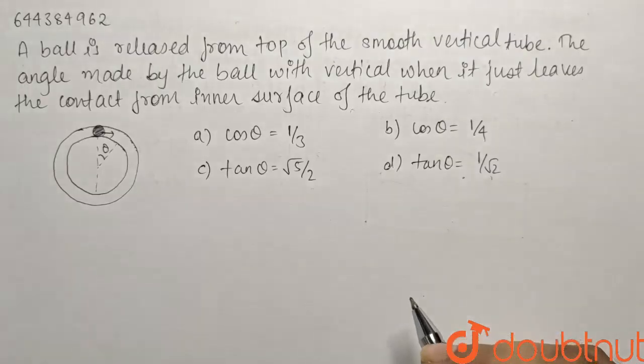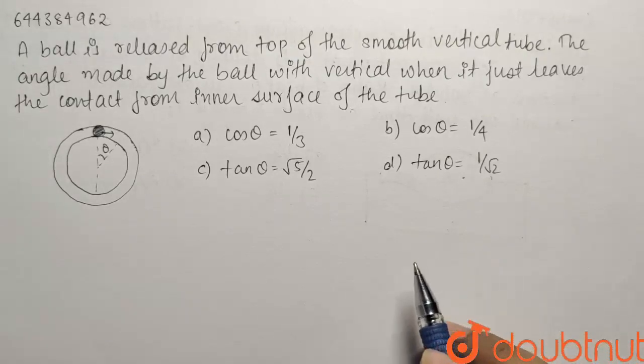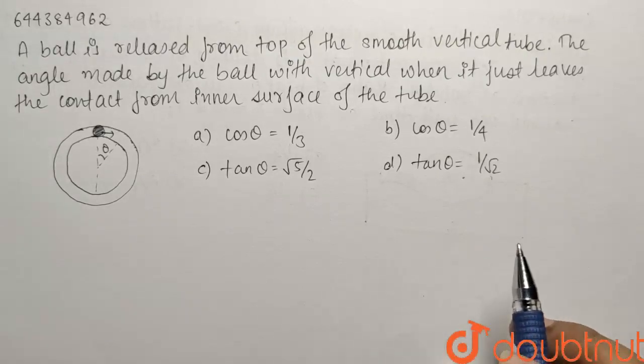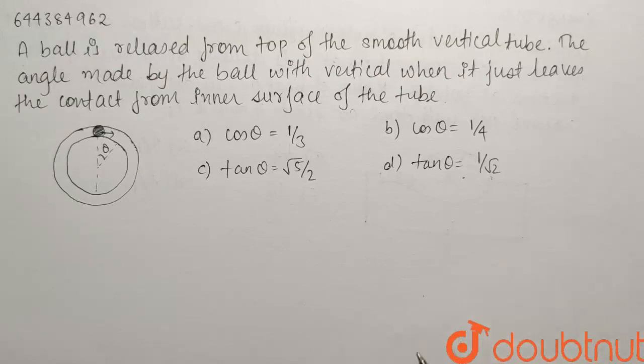Here we have a question from Newton's laws of motion. A body is released from the top of the smooth vertical tube. The angle made by the ball with the vertical when it just leaves the contact from the inner surface of the tube.